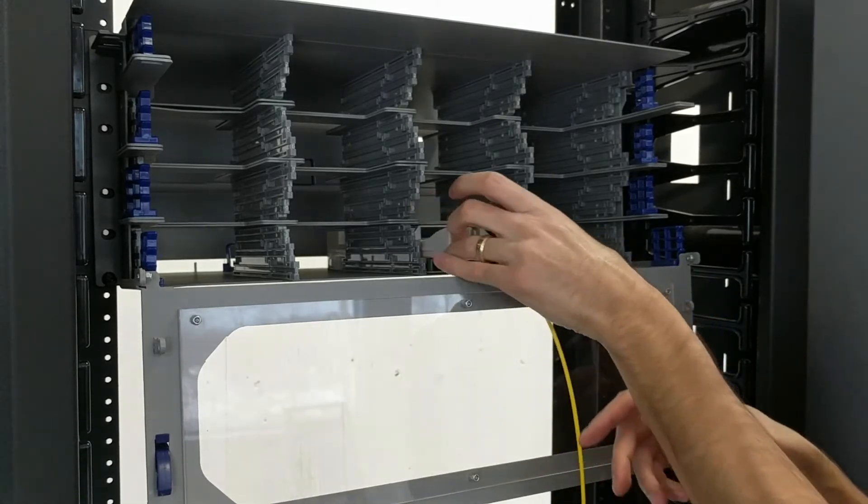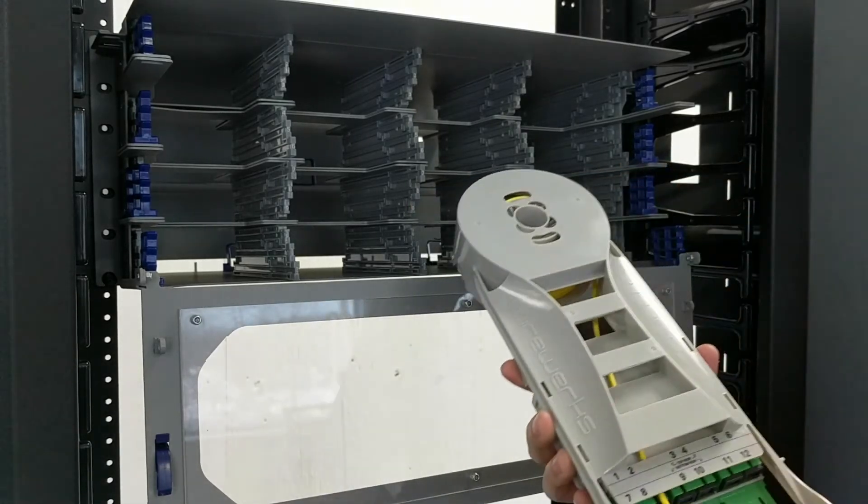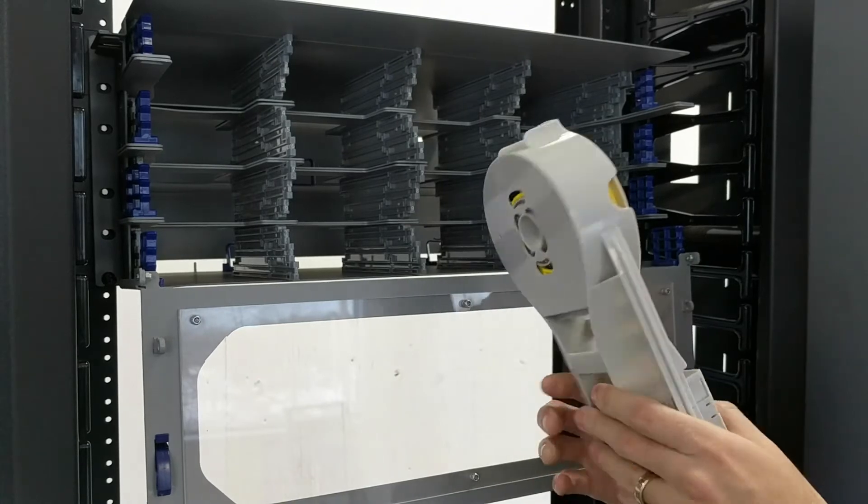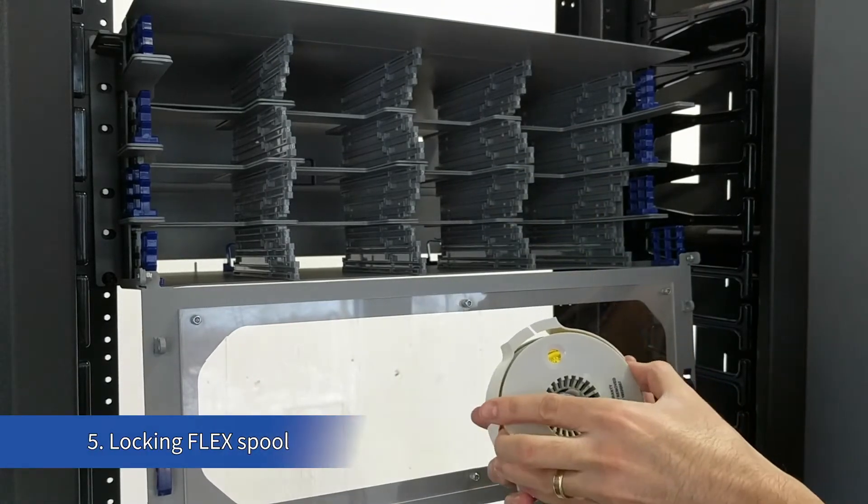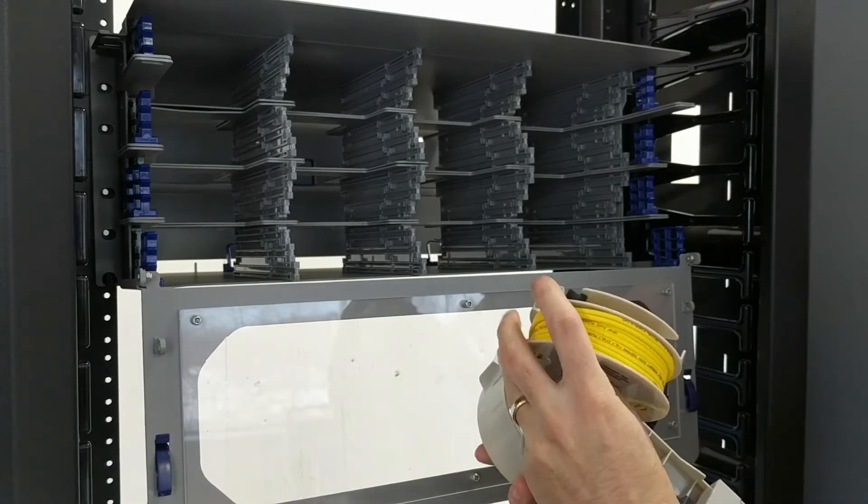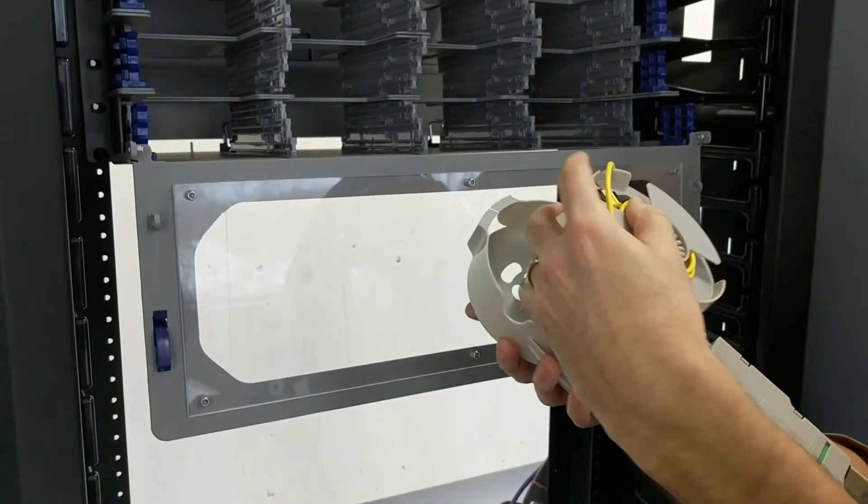To remove the FlexModule, simply squeeze the two tabs inwards and pull the module out. Now, to lock the flex spool in place, carefully remove the spool and flip it over to the opposite side, exposing the MPO connectors.